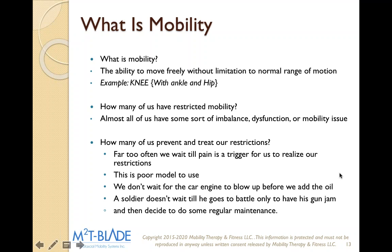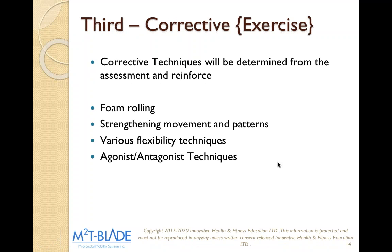How many of us prevent and treat our restrictions? Probably not many. We don't wait for the car engine to blow up before we add the oil. Then the final thing we do is corrective exercise. Corrective techniques are determined from the assessment. For example, if a massage therapist has a client with poor shoulder mobility, works on their pecs, shoulders, rhomboids, and latissimus — they'll get off the table and go right back into that same posture. So we create tissue mobility and then strengthen and re-educate the body.